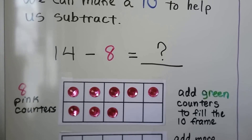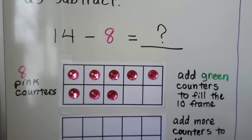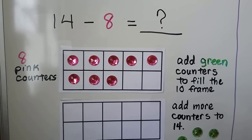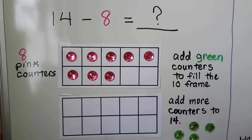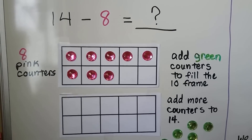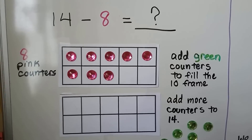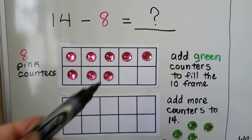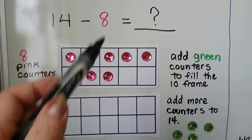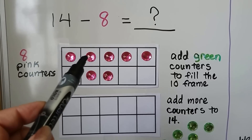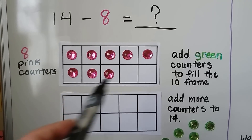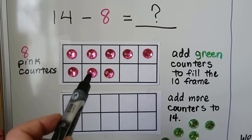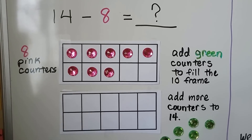14 minus 8 is equal to what number? We start with eight pink counters: one, two, three, four, five, six, seven, eight.